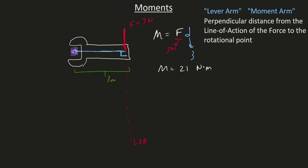A moment is a vector too — not only does it have a magnitude, but it has a direction as well. In this context, using this equation, it's not too hard to determine the direction. How would this force want to rotate this wrench?